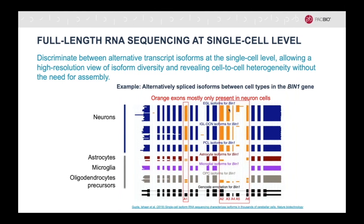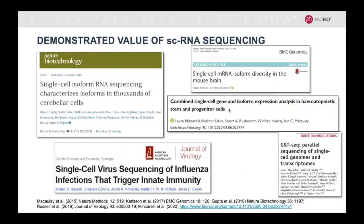As an example, Gupta and colleagues found that certain exons, shown here in orange, of the VIN1 gene — another candidate gene for Alzheimer's — are only present in certain brain cell types. For example, these can only be seen mainly in neurons, but much less, or not at all, in astrocytes, microglia, oligodendrocytes, or precursors. Many customers have demonstrated success with the single-cell IsoSeq method across many different research disciplines, highlighting the additional data that can only be seen by combining single-cell with full-length RNA sequencing.